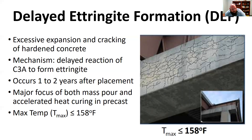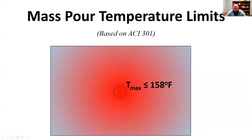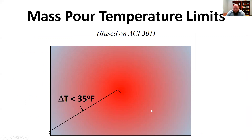You don't want this delayed ettringite formation to occur. Especially in the precast industry, where you're trying to get beams off the line as quickly as possible, you really don't want to accelerate the heat of that concrete above 158 degrees Fahrenheit. Based on ACI 301, the max temperature of the core needs to be about 158 degrees F, and the differential from the middle to the outer edge cannot be more than about 35 degrees F.